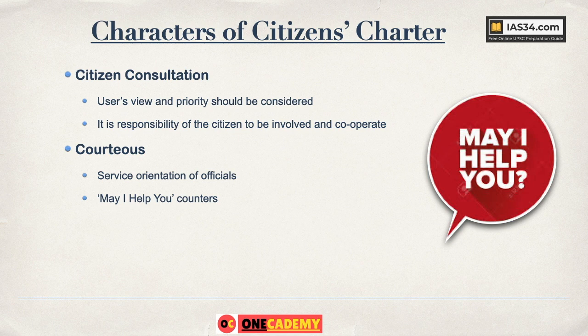The next characteristic is being courteous. The office and its officers must not be arrogant. They should understand that they are there for the service of citizens. Every official should have a service orientation, and there should be 'May I Help You' counters for easy information delivery — for example, at railway stations where you can get answers about your train. Such counters should always be clearly marked as help desks.